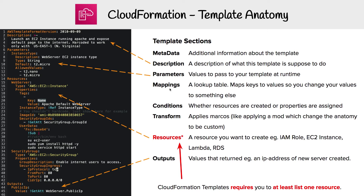Then you have conditions, which are like if-else statements within your template. Transform is more difficult to explain if you don't know what macros are, but the idea is it's like applying a mod to the actual template — it changes what you're allowed to use. We see that with SAM, the Serverless Application Model, which is a transform.